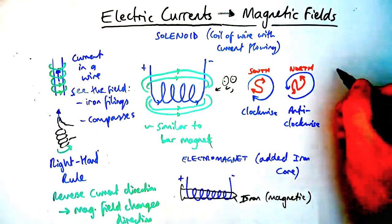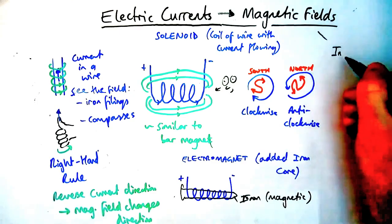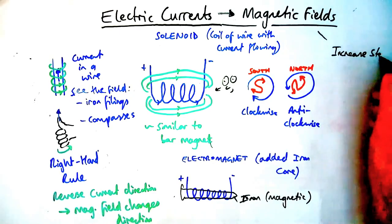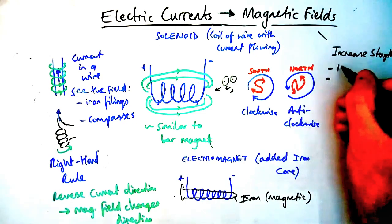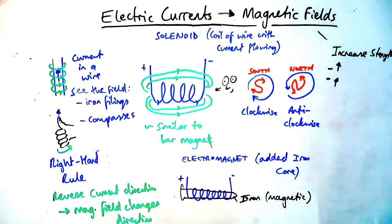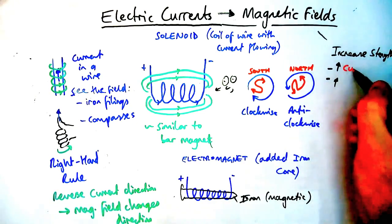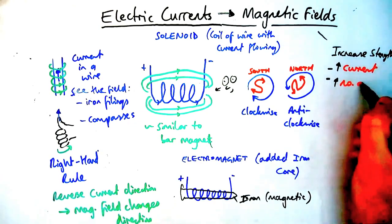With all these magnetic fields you can increase the strength by doing a couple of things. To increase the strength of the magnetic fields caused by electric currents you could either increase the strength of the current. You could also say PD but it's the current that's going around the wire so we say current.